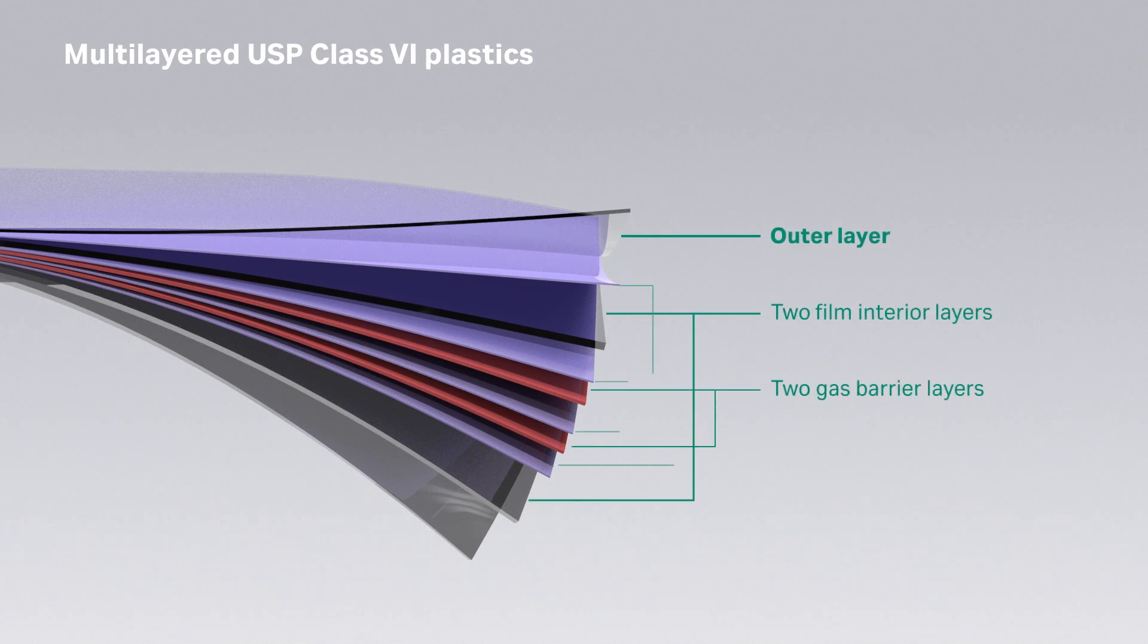We manufacture our cell bag bioreactors from multilayered USP class 6 plastics. The fluid contact surface is an ethylene vinyl acetate and low-density polyethylene copolymer of the type routinely used for collecting blood and handling biological fluids.